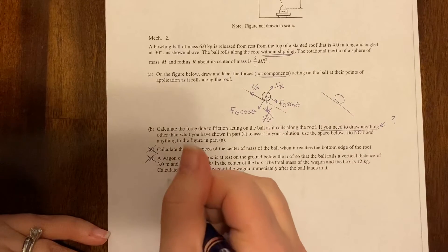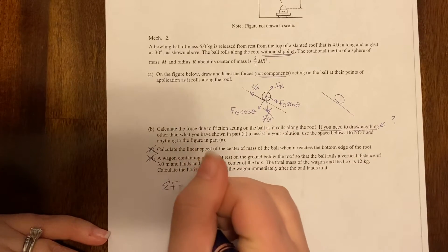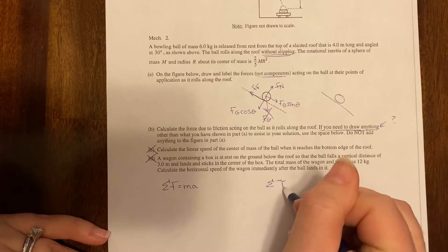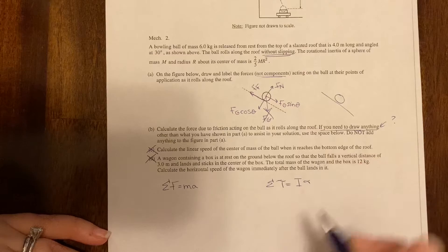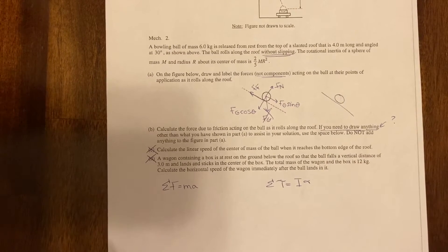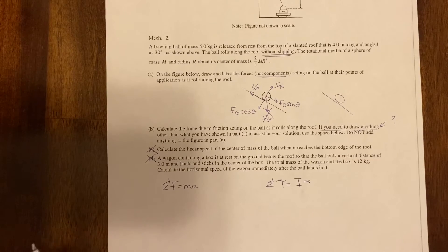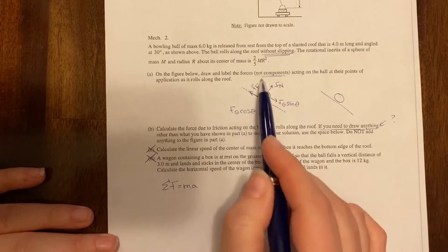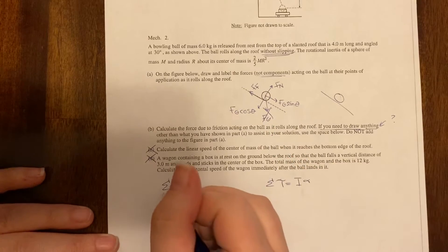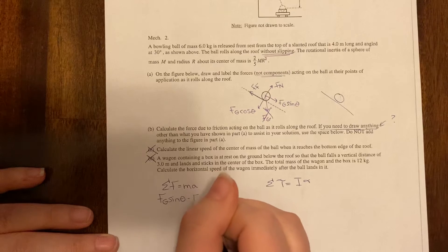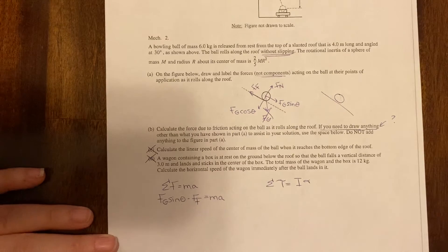All right so first thing I'm going to do is write out the sum of the forces equals ma and I'm also going to write out the sum of the torques equals I alpha. Okay so our first thing is what forces are acting and in which direction. Okay well hopefully you're saying that Fg sine theta is pulling down the ramp and the force of friction is acting in the opposite direction, so we've got Fg sine theta minus Ff equals ma.